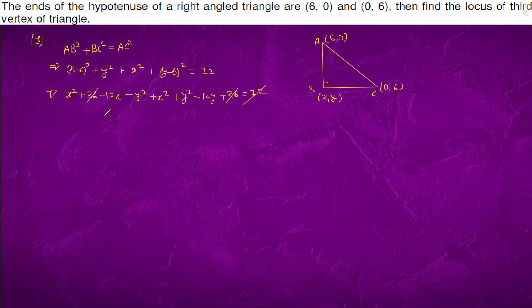We will get 2x square plus 2y square minus 12x minus 12y equals 0. Hence we will get x square plus y square minus 6x minus 6y equals 0. This is the equation, this is the equation of locus.